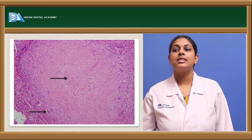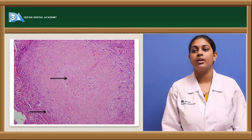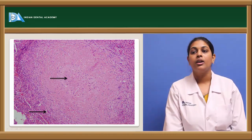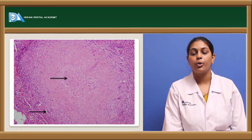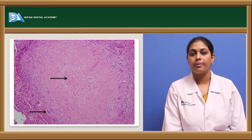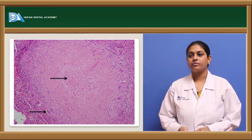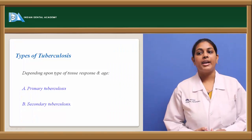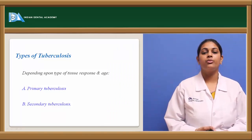A micrograph stained with hematoxylin and eosin shows the tuberculosis lesion with a central area that is eosinophilic and structureless, and peripherally the arrows show the Langhans type of giant cells with proper horseshoe-shaped arrangement of nuclei.